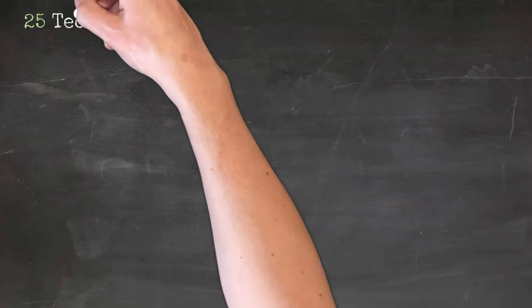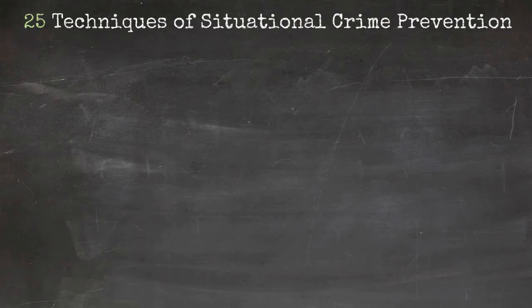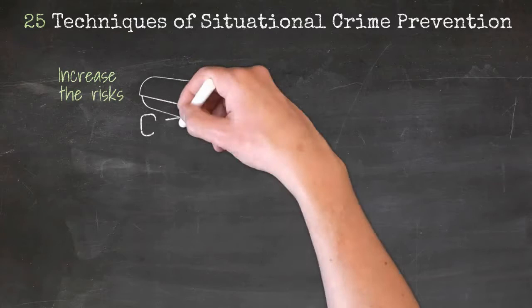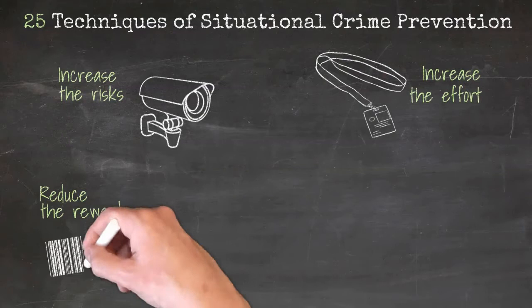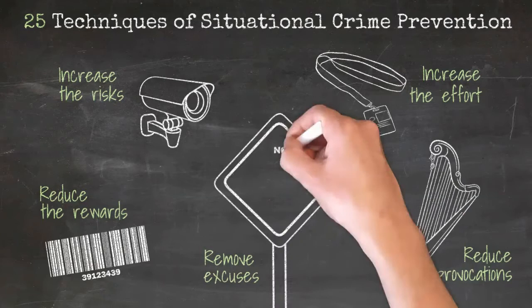By 2003, Clark had established 25 different techniques for making someone think twice about committing a crime in one of five ways: by increasing the risk of being caught, by increasing the effort they need to put into it in order to pull it off, reducing a criminal's rewards, removing things that might provoke someone, or by eliminating excuses for deviant behavior.